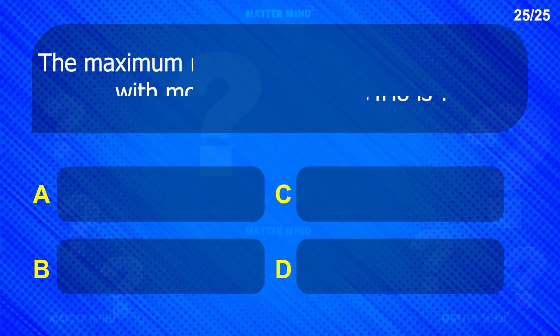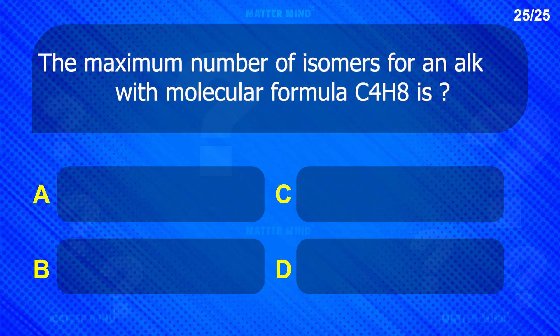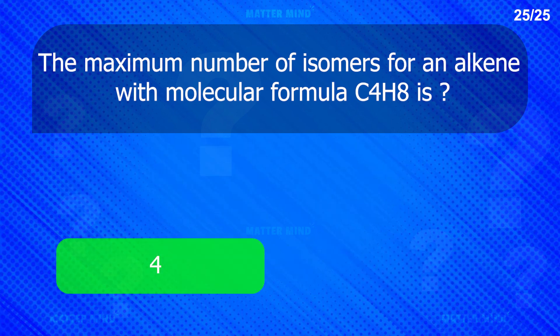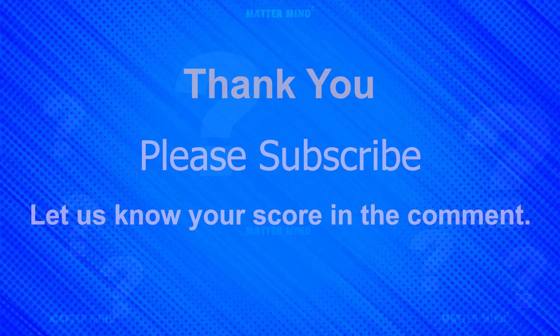The maximum number of isomers for an alkene with molecular formula C4H8 — hope you enjoyed the quiz.